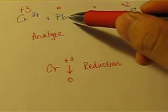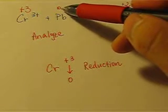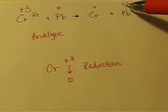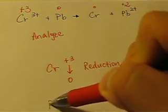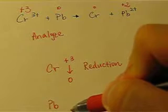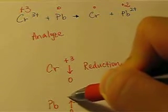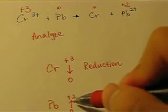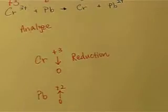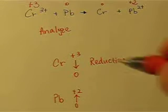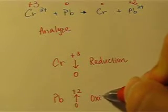And let's look at Pb, lead. It is zero on the left plus two on the right. So it's going from zero up to positive two. And when we see a positive change in oxidation number, it is oxidation.